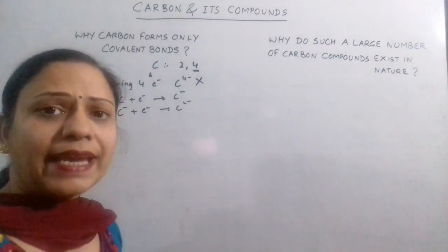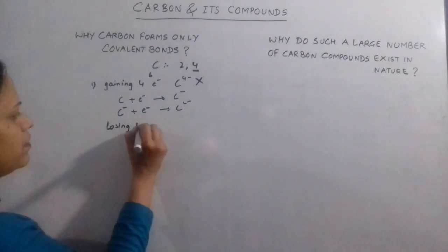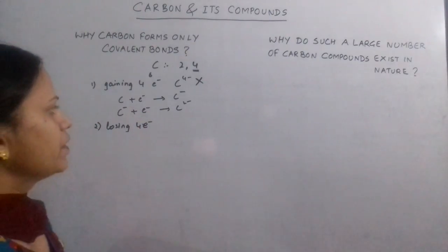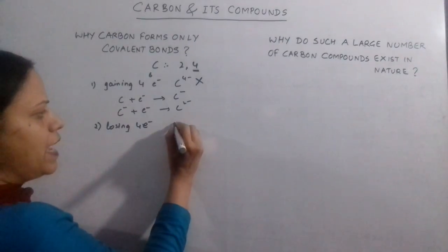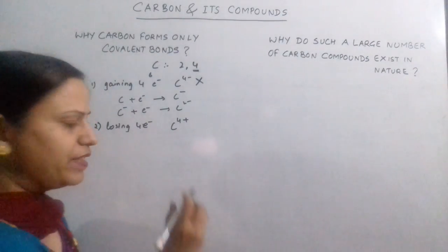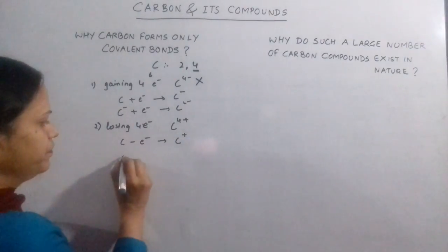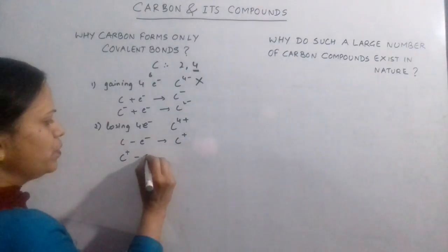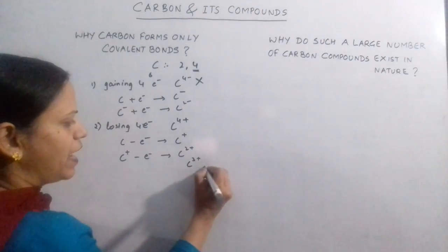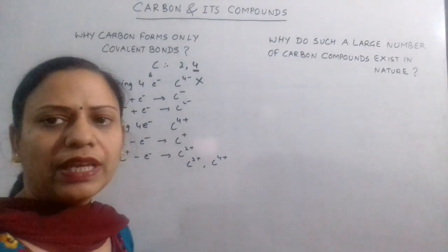Now coming to the second possibility, losing 4 electrons. If carbon loses 4 electrons, the ion formed will be C4 positive. When the first electron is lost it forms C positive. C positive on losing another electron forms C2 positive. Finally C3 positive and C4 positive will be formed on losing the third and fourth electron respectively.